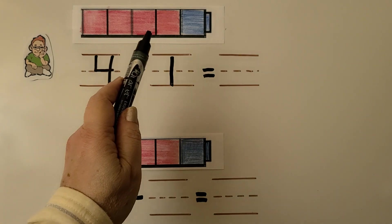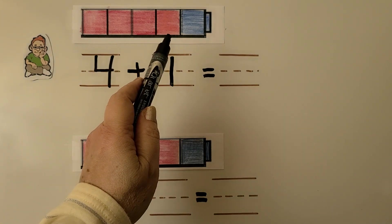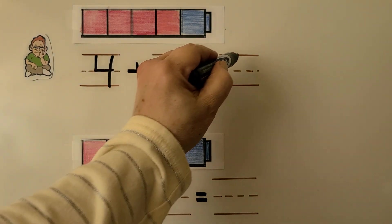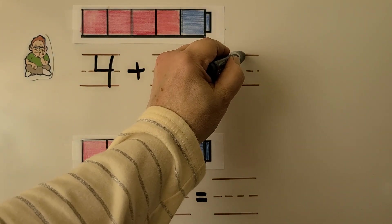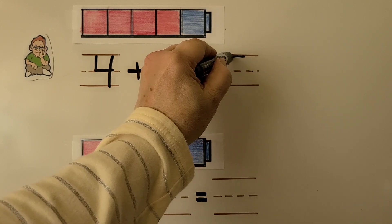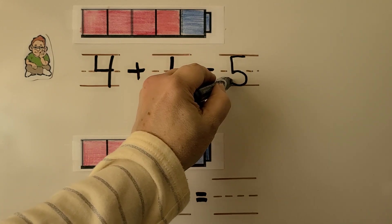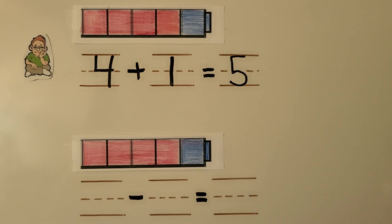One, two, three, four, five. We can write the number in all. Four plus one is equal to five.